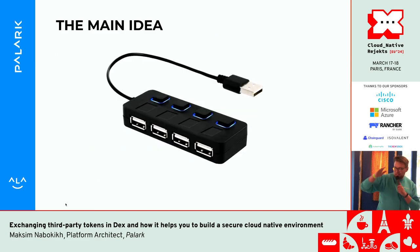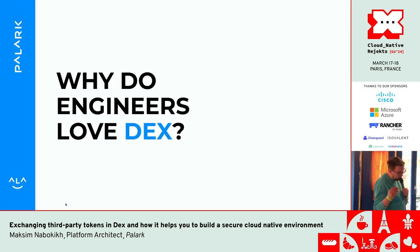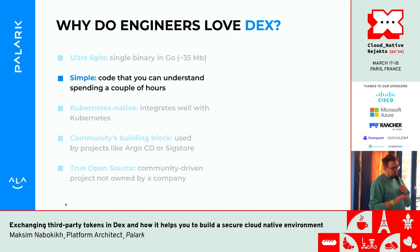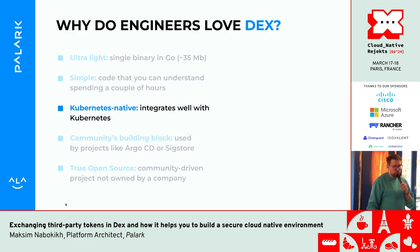The idea of DEX: on one side there is the standard OpenID Connect interface, and as input we can have many different protocols — that's DEX. Why do engineers love DEX? It's ultralight: a single binary written in Go, approximately 35 megabytes in size. DEX is simple — the codebase is small, you can spend a couple of hours to understand the contents. DEX is Kubernetes-native: developed for Kubernetes, it runs well on top of Kubernetes. We will discuss this in detail later.